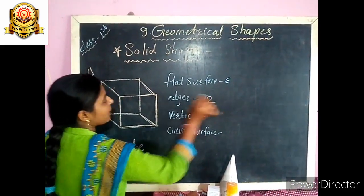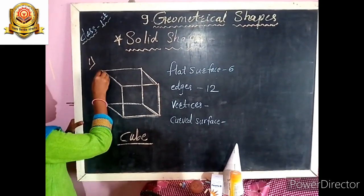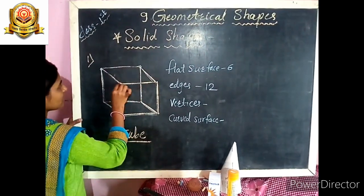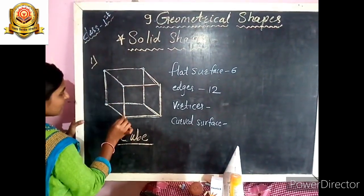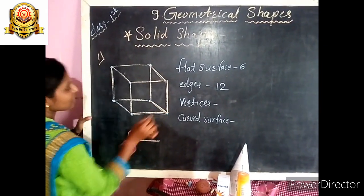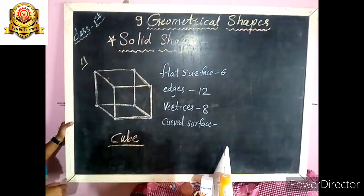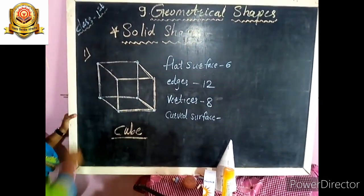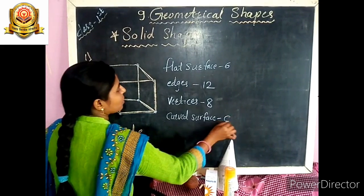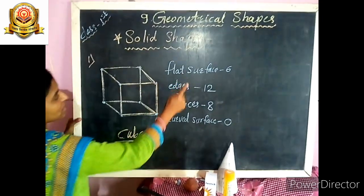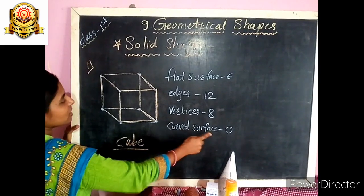Cube has 12 edges and vertices. Vertex means corners. The cube has how many vertices? 1, 2, 3, 4, 5, 6, 7, 8 — this cube has 8 vertices. Does this cube have any curved surface? No, only flat surfaces — 0 curved surfaces. So: cube has 6 flat surfaces, 12 edges, 8 vertices, and 0 curved surfaces.